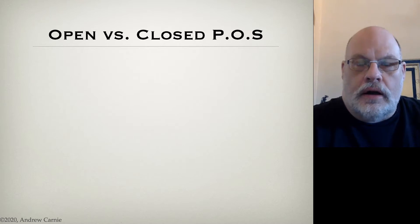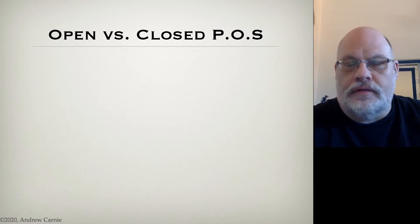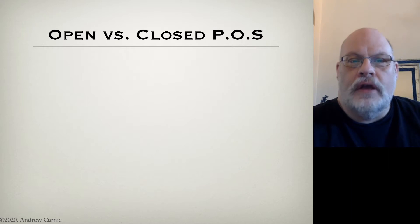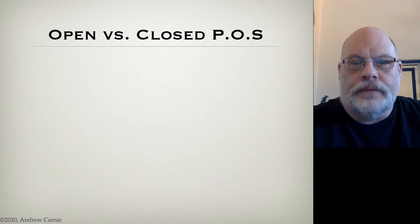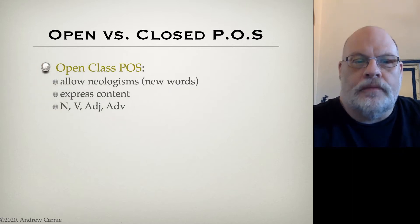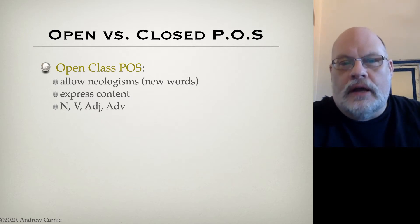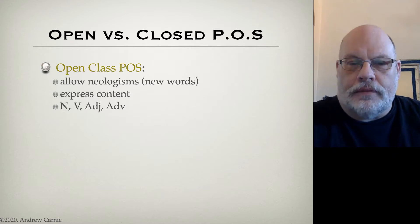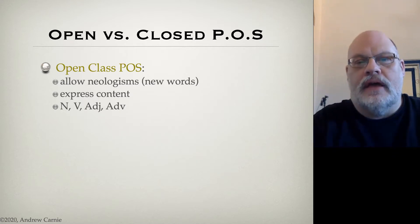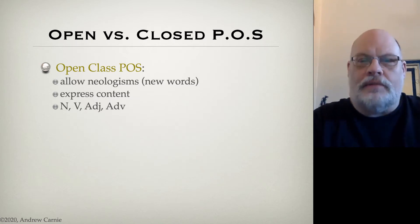Before we start looking at definitions of different kinds of functional parts of speech, I want to make two pieces of terminology clear. The first is the distinction between open and closed class parts of speech. Open class parts of speech allow neologisms — new words. They typically express content, and they are typically the major categories, like nouns, verbs, adjectives, and adverbs. Open class means you can make up a new word with a new meaning, and it fits right into that part of speech.